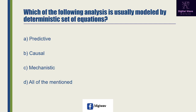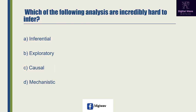Next question: which of the following analysis is usually modeled by a deterministic set of equations? Option A is 'predictive', option B is 'causal', option C is 'mechanistic', and the last option is all of the mentioned. The right answer will be C: mechanistic, because the equations are based on the physical and engineering sciences.